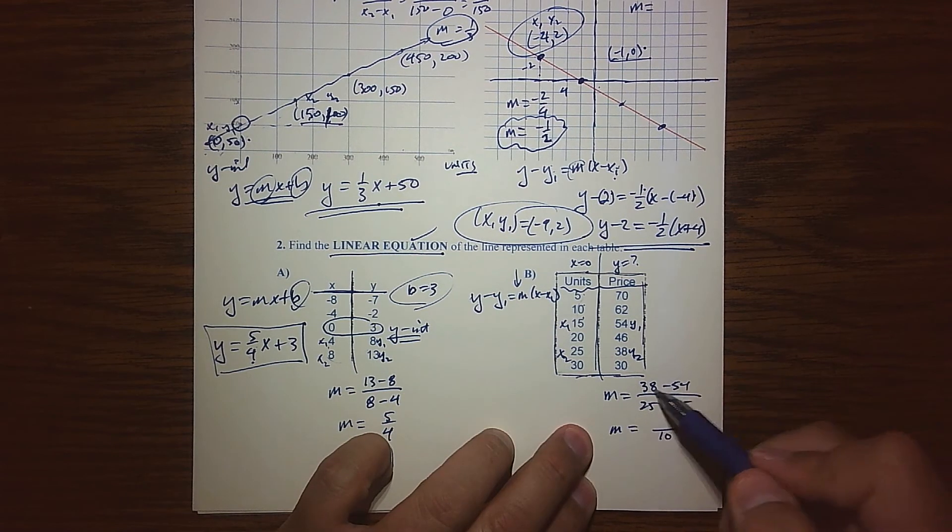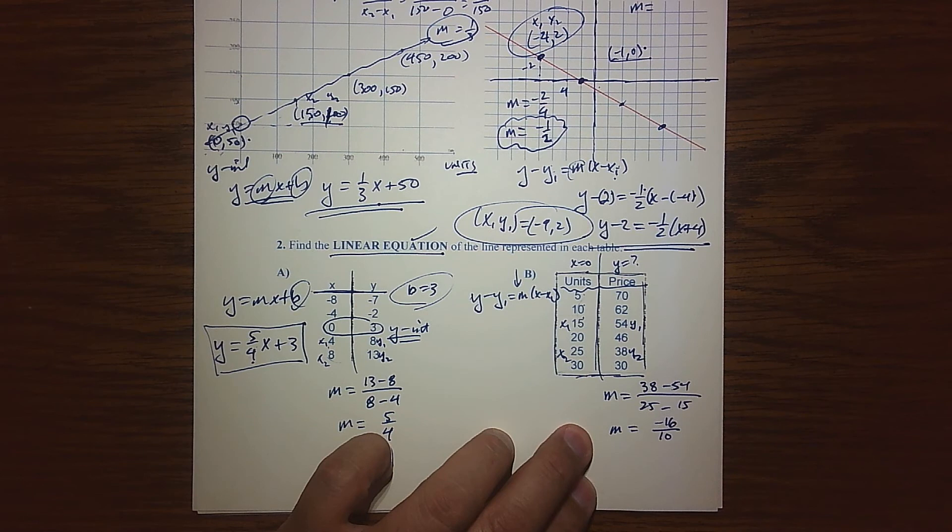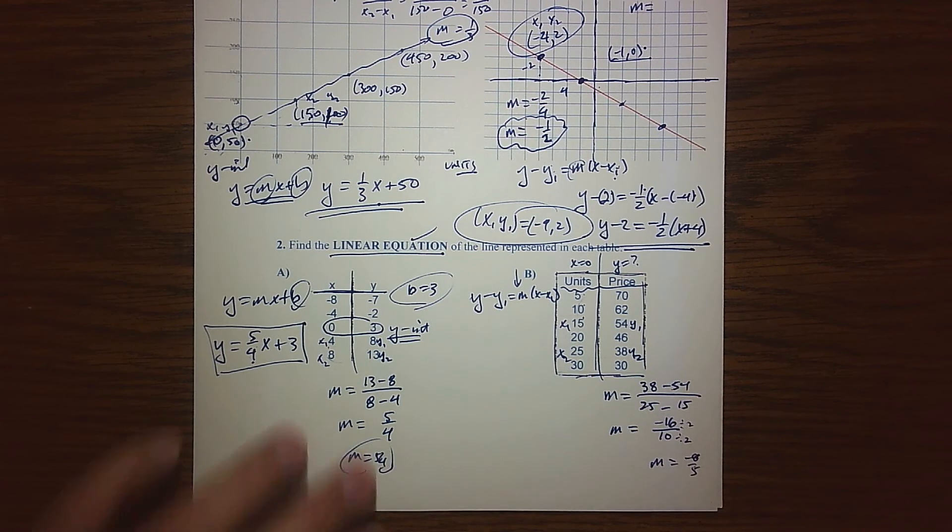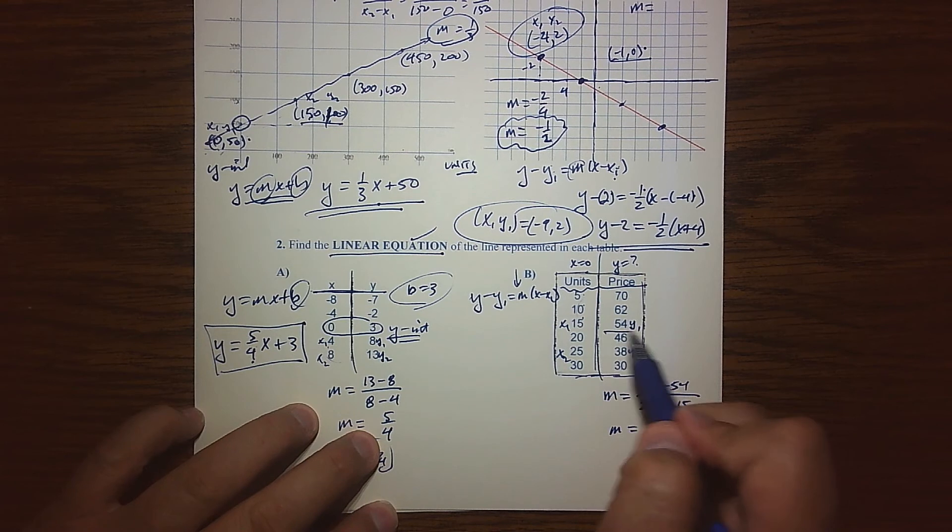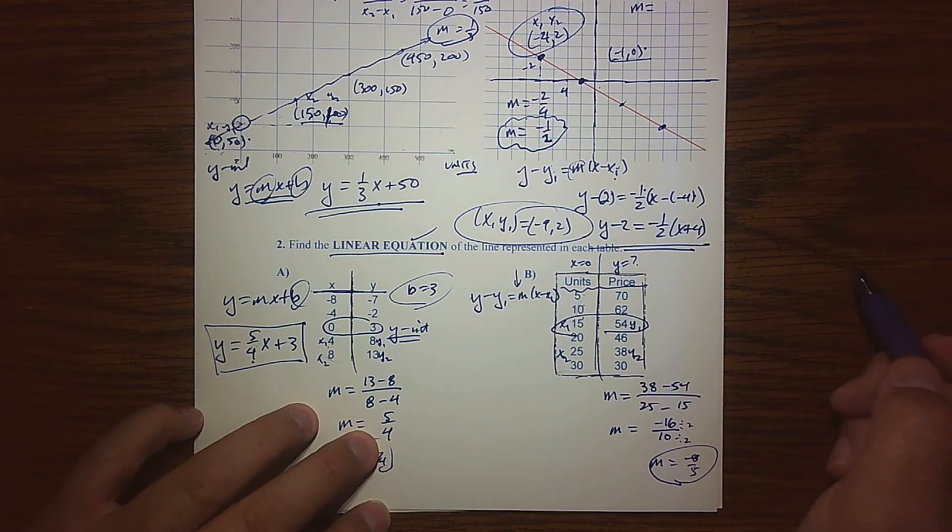I know I get 10 down below. 38 take away 54. Let's see, 14, 12, 16. Negative 16. Dividing everybody by at least 2, we get m equals negative 8 fifths. I think I did that right. So there's my slope and there's my x1 and my y1.